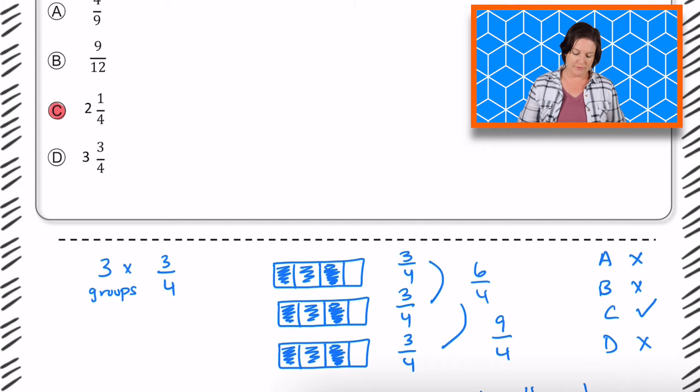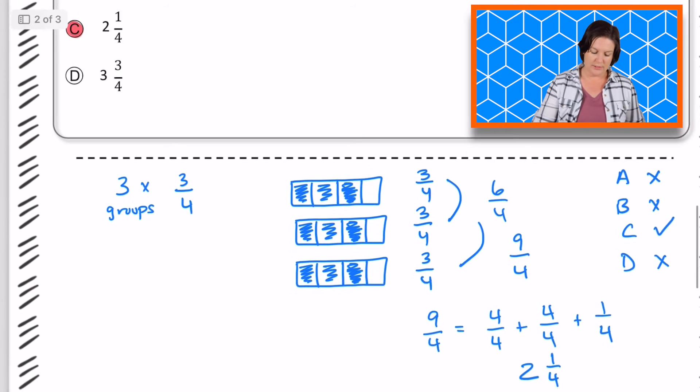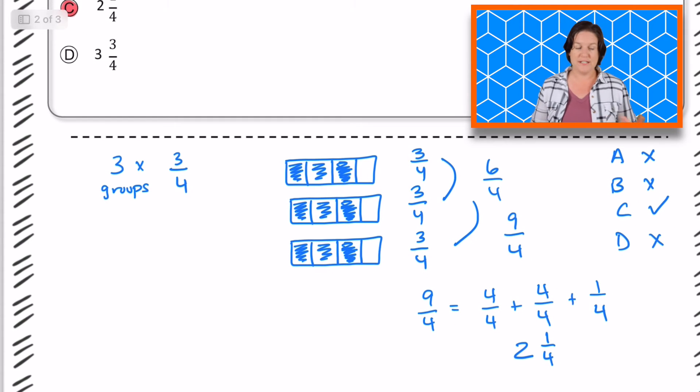Now you may have done it a different way. Maybe you did it like this where you had 3 times 3/4, and you said that 3 times 3 equals 9, so 9/4. That would have been fine too. And then you could know how to change it into a mixed number there.